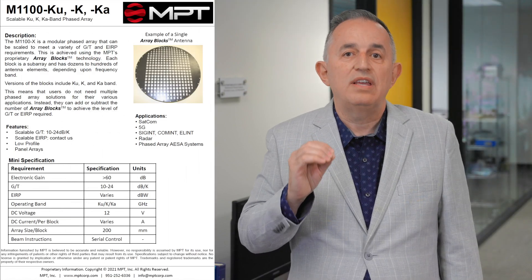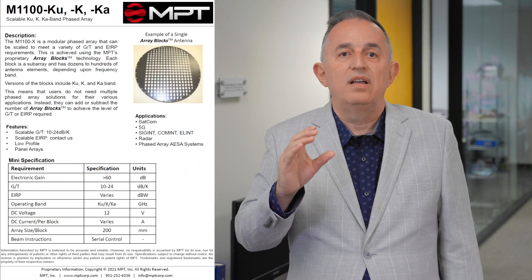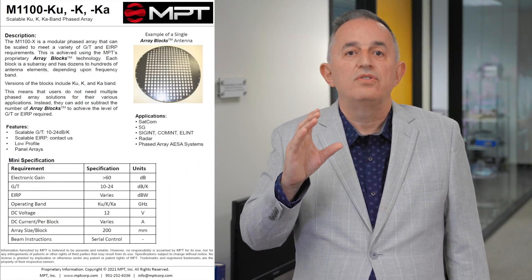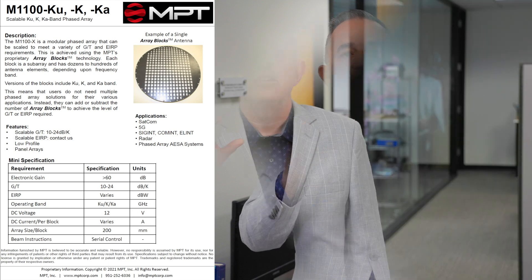An important key to MPT's success in phased arrays is its proprietary array blocks technology. It supports satellite phased arrays in X, Ku, K, and Ka band. Array blocks are used to scale the phased array to meet specific customer requirements. For instance, if a particular G over T is needed, then array blocks are combined by MPT to achieve that specification.